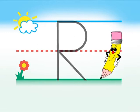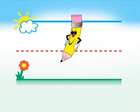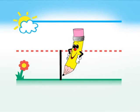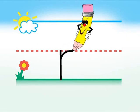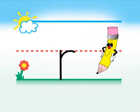To write the lowercase r, we start at the fence and pull down to the ground. Go back and start just below the fence and curve to the right up to the fence and make a hook. Good job!